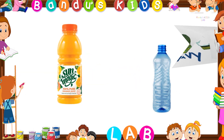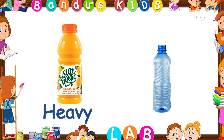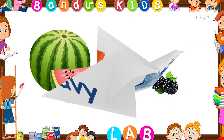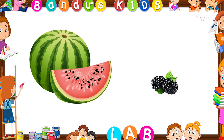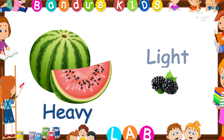Can you guess which one is the heavy one here? You are right, it is the bottle of juice. Here, the bottle of juice is heavy and the empty bottle is the light one. Which one is the heavy one here? Which one is the light one here? You are right — the mulberry is the light one and the watermelon is the heavy one.